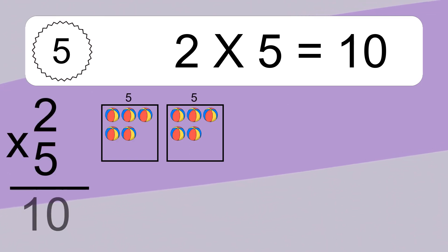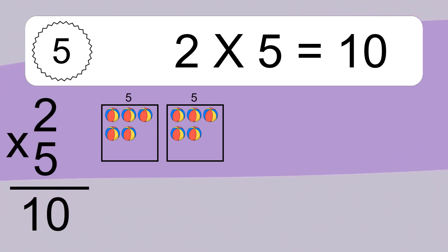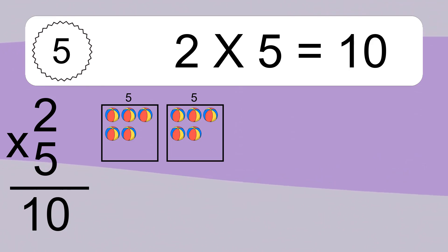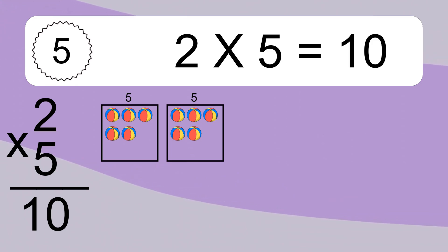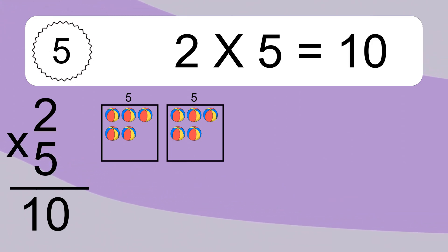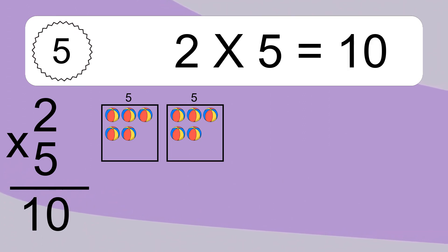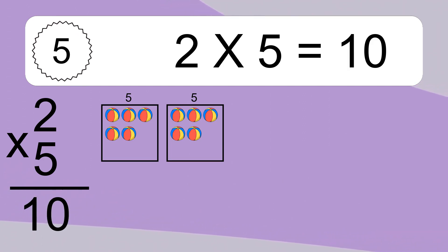2 times 5 equals what? 2 times 5 equals 10. We have 2 boxes, and each box has 5 colorful balls inside. If you count all the balls in all the boxes together, you will have 2 times 5 balls. This equals 10 balls.